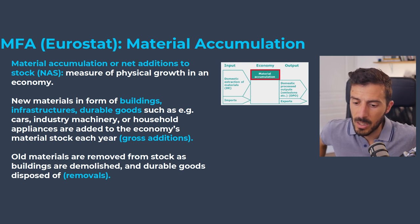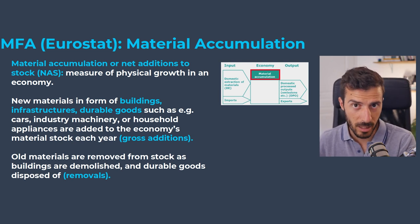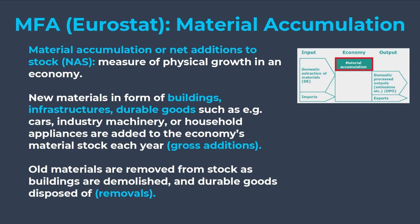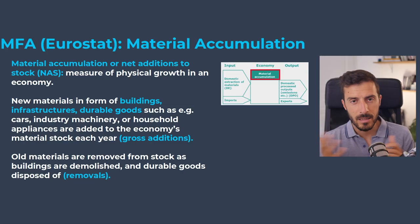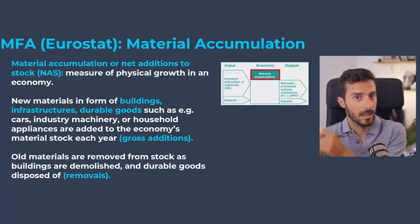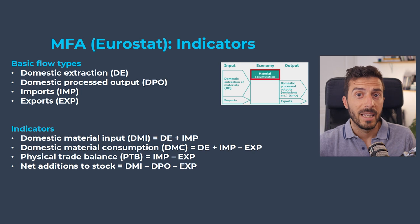I'll skip the balancing items for this video as they follow specific formulas in the handbook. For material accumulation or net addition to stock, this is the physical measurement of growth or degrowth of infrastructure — all new materials entering or exiting buildings and infrastructure. In economy-wide MFA you don't measure it directly; you subtract what exits your territory from what enters. It's not a measurement of your stock itself but a dynamic: is the stock increasing or decreasing?